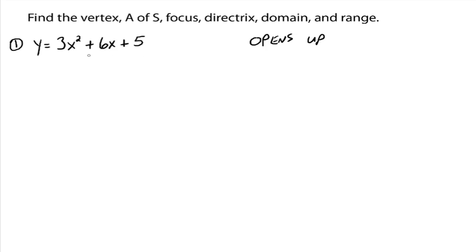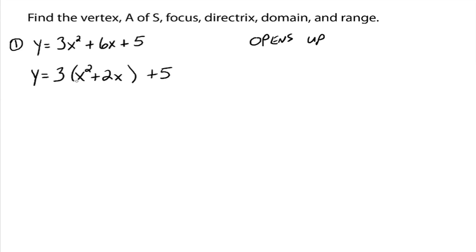So let's take this and we're going to complete the square on the x's. We're going to leave this y alone. You want the coefficient of your squared term to be a 1. Right now it's a 3, so we've got to factor that 3 out of just the two terms that have x's — not the constant term. Then close it off, and this plus 5 we're just going to push down the road. All we've done is just taken this first line and rewrote it a different way. Now our goal is inside the parentheses to complete the square, to make this a perfect squared trinomial.